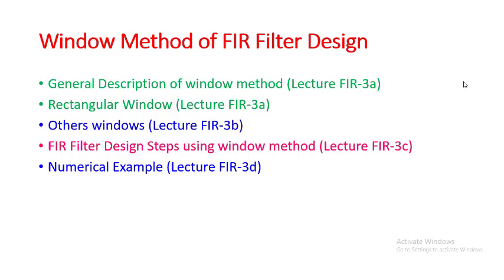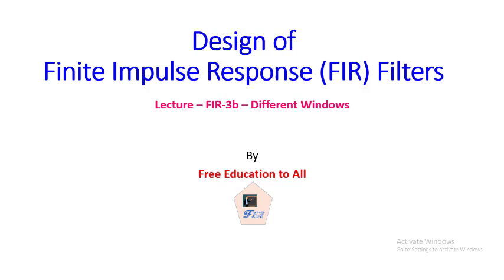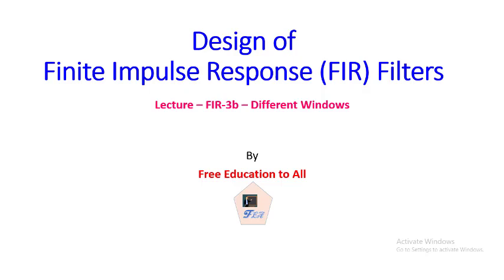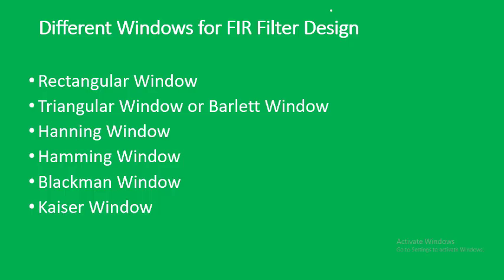Welcome back. This is the second lecture of FIR filter design Part B. So far in our first lecture we completed the general description of the window method and rectangular window. In this lecture we are going to discuss the other windows used for FIR filter design. We have seen that there is a disadvantage of the rectangular window in the form of the Gibbs phenomenon.